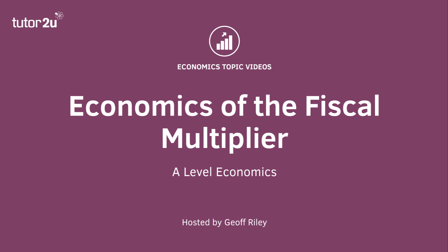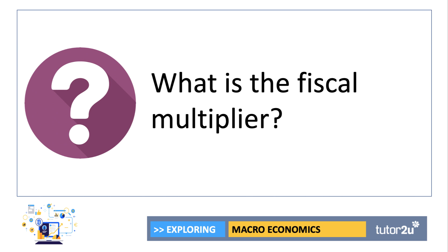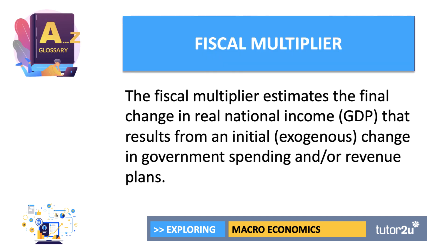So let's take a few minutes to think about the economics of the fiscal multiplier. First of all, what is the concept known as the fiscal multiplier? Well, the multiplier effect is when there is a change in either government spending or taxation which has a bigger, wider effect on the economy. Technically speaking, the fiscal multiplier estimates the final change in real GDP that results from an initial or exogenous change in either government spending or perhaps a change in their revenue plans.